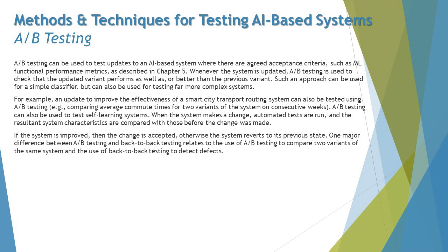The scope of A/B testing is not limited to ordinary AI-based systems; it also applies to self-learning systems and far more complex systems. This technique gives clarity about the desired output, which is especially useful because AI-based systems can produce a variety of outputs, and we don't always have certainty about which is best recommended. If the system is improved, the change is accepted; otherwise, the system reverts to its previous state.